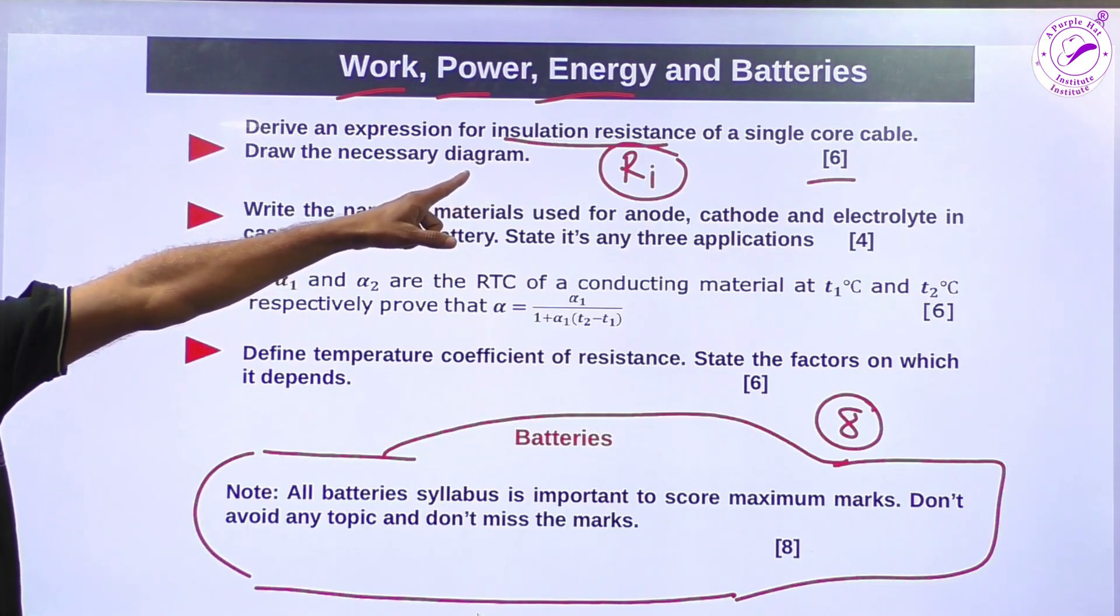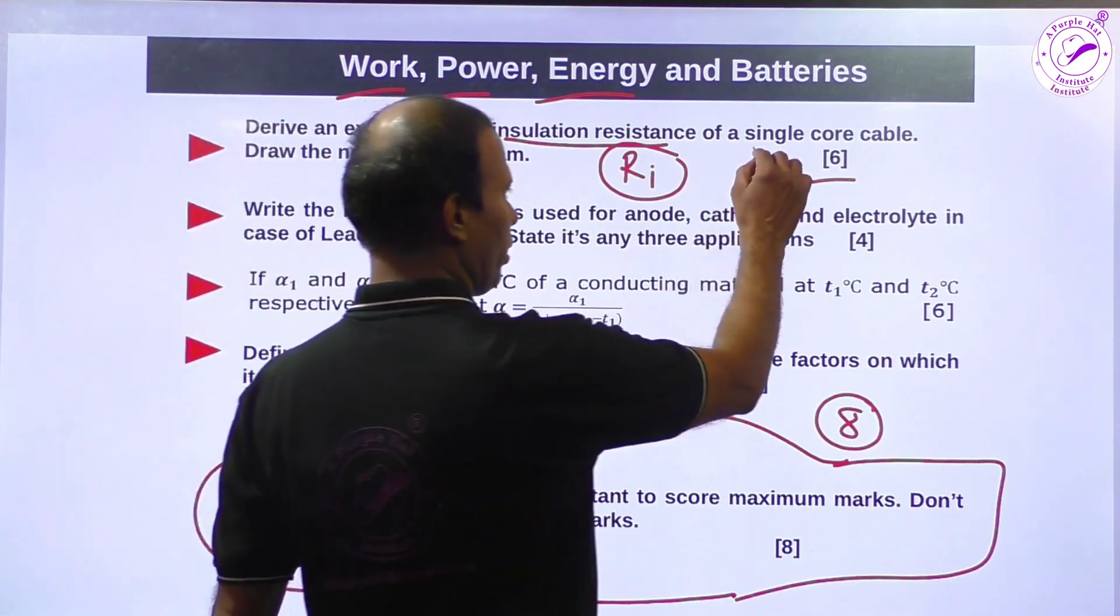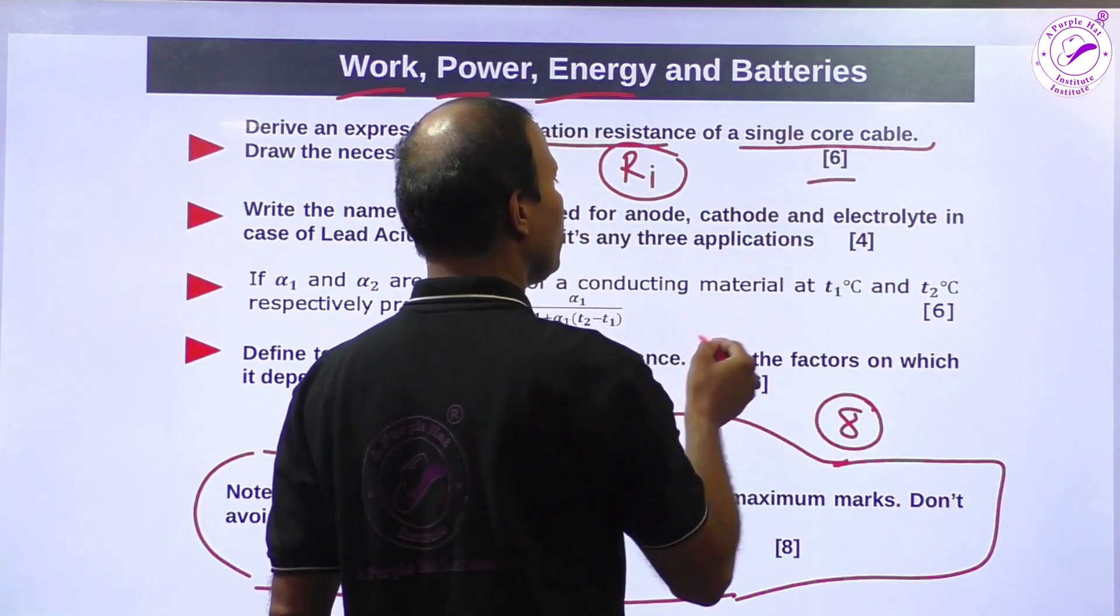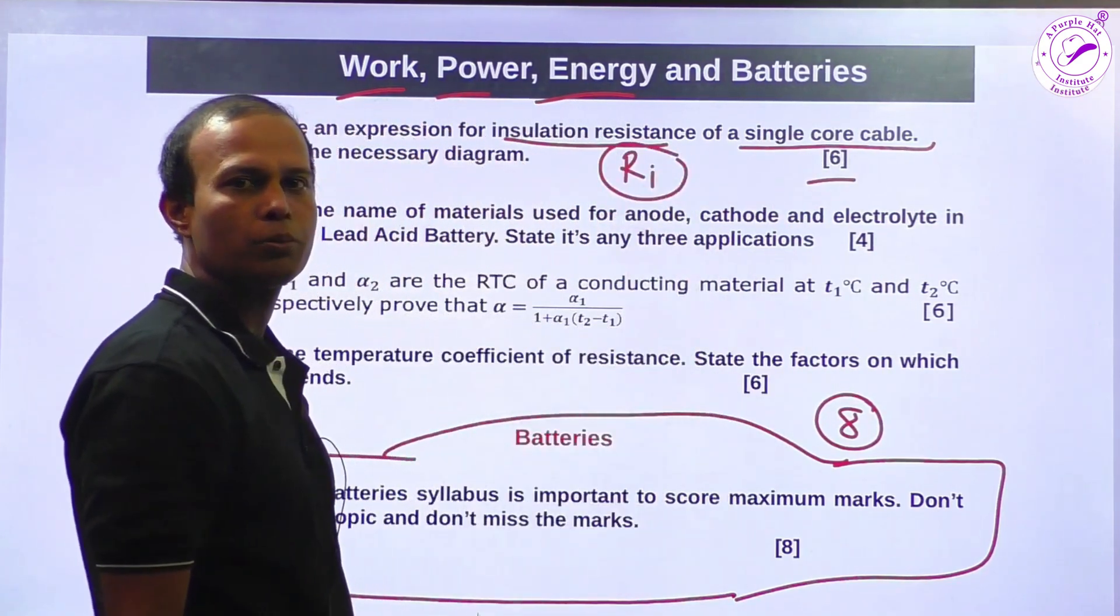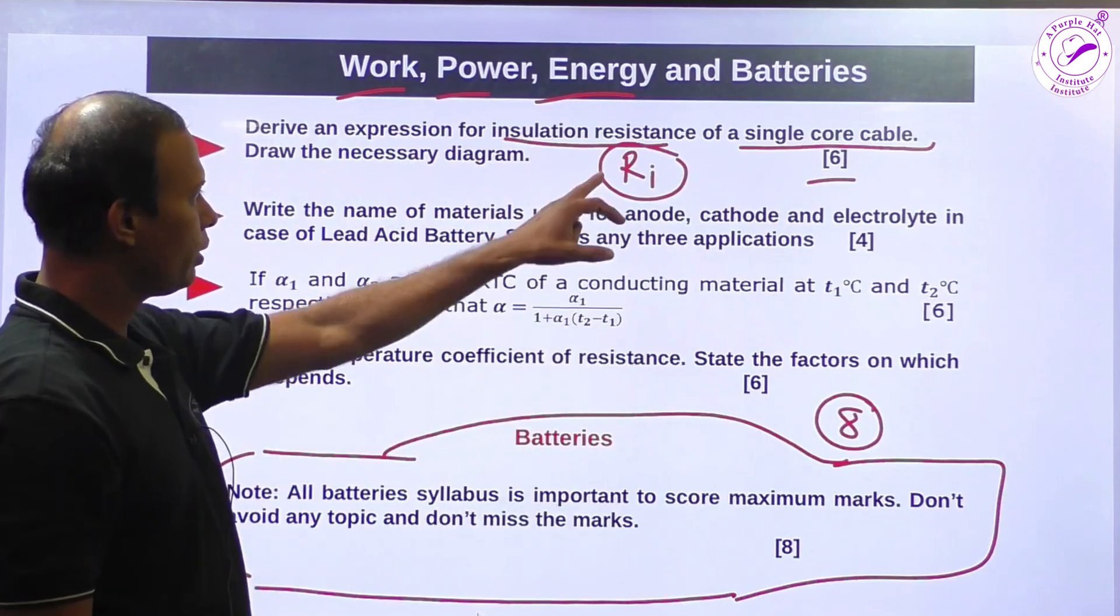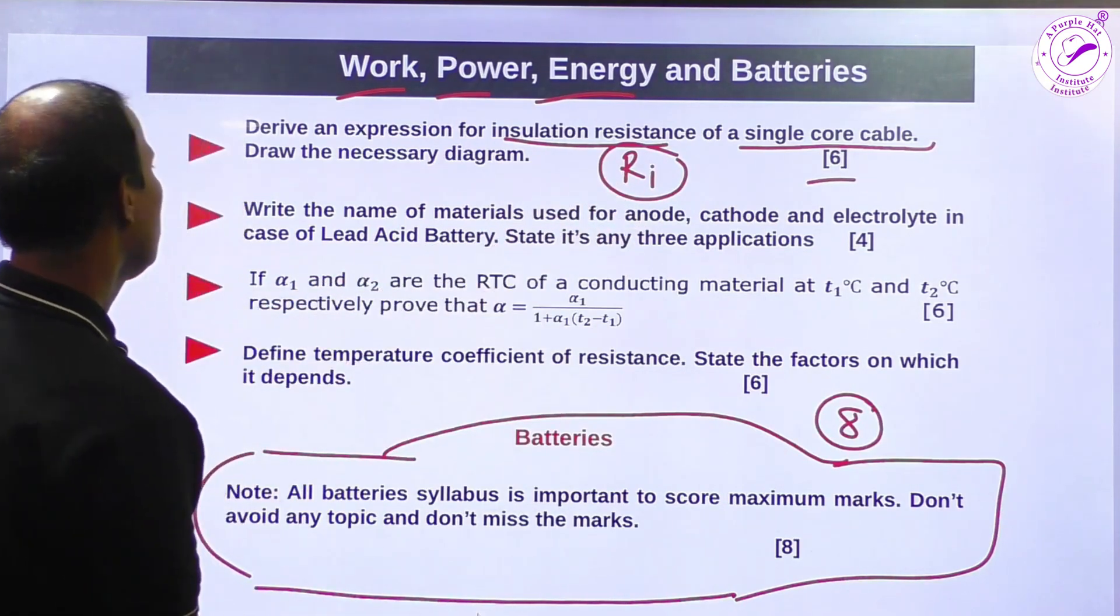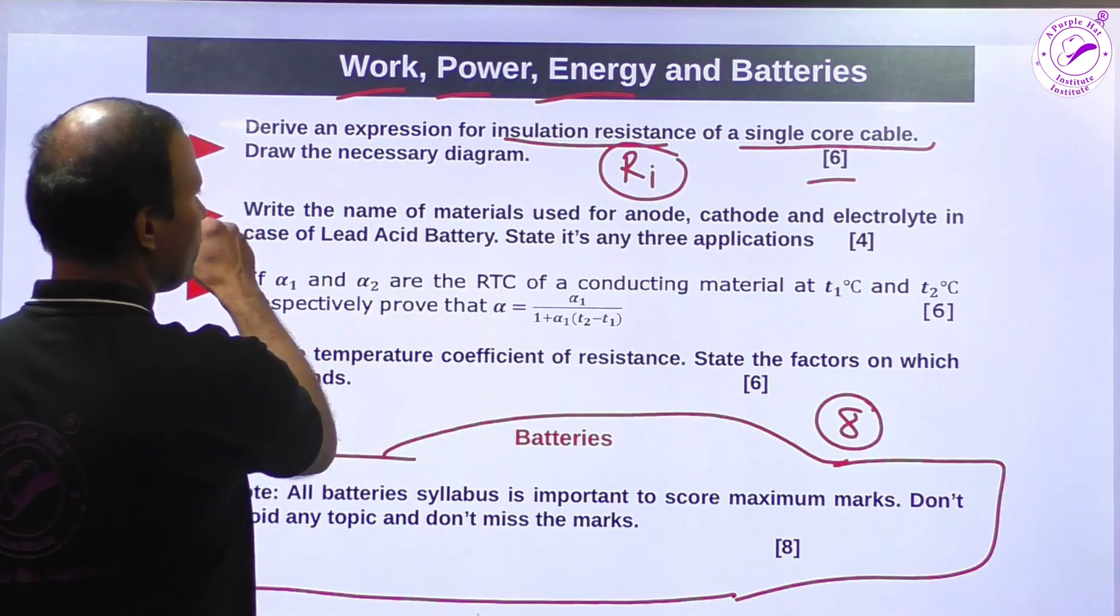It arises generally in single core cable because every cable is covered with insulating material. So this insulating material must be standard so that the insulation resistance should be very high as possible in megaohms.